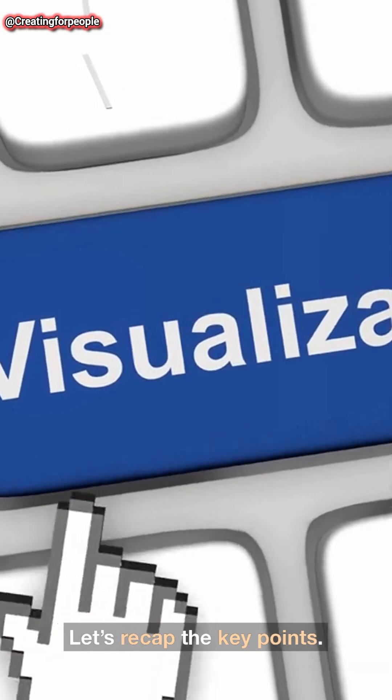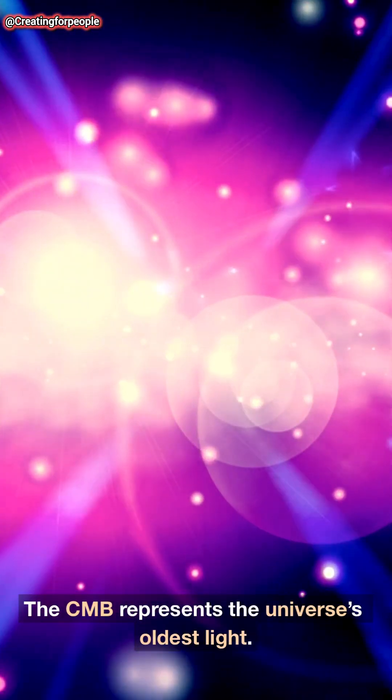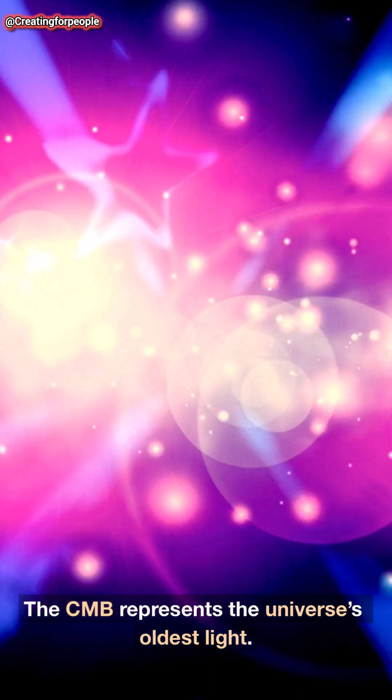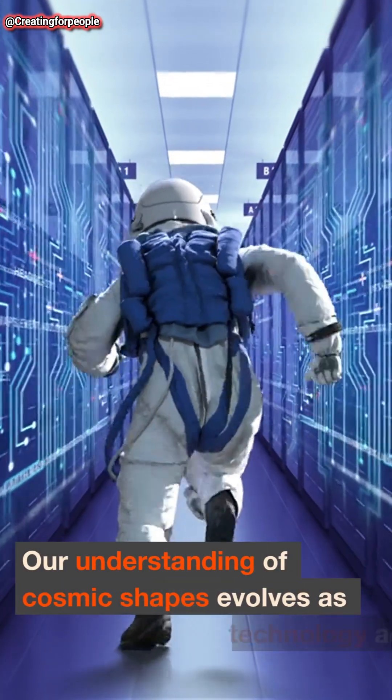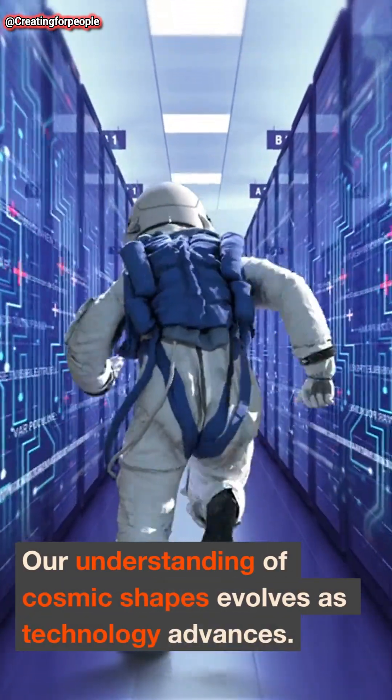Let's recap the key points. The CMB represents the universe's oldest light. It suggests a flat universe based on detailed measurements. Our understanding of cosmic shapes evolves as technology advances.